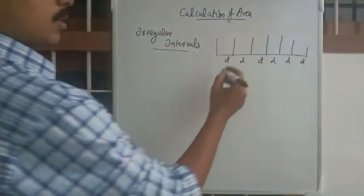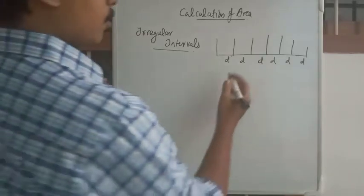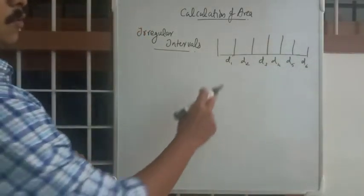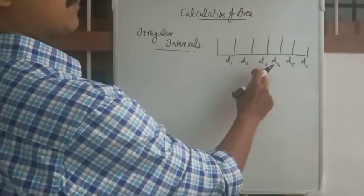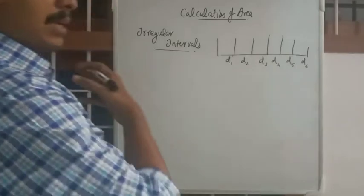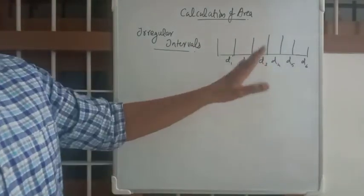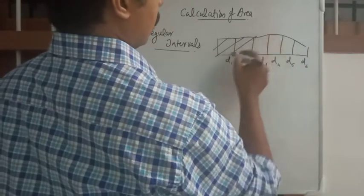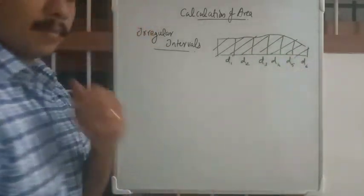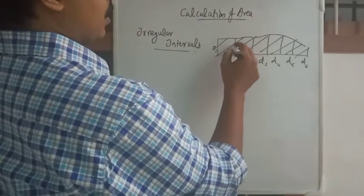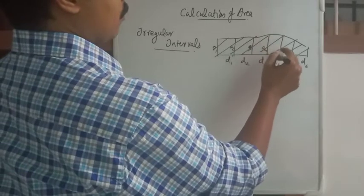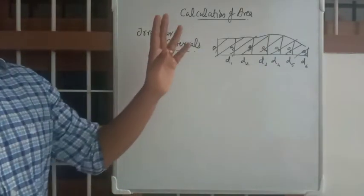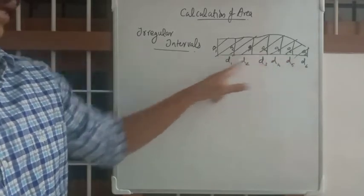With irregular intervals, all D values will be different — D1, D2, D3, D4, D5, D6 — not equal at all. For example, this could be 10 meters, 7 meters, 9 meters, 11 meters, 20 meters — a wide variety of D values. You will also have corresponding offset values O1, O2, O3, O4, O5, O6, O7, etc.